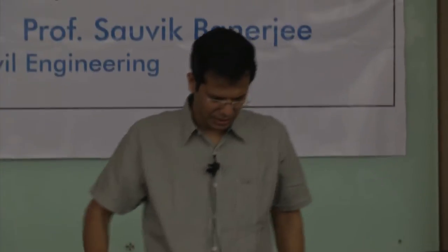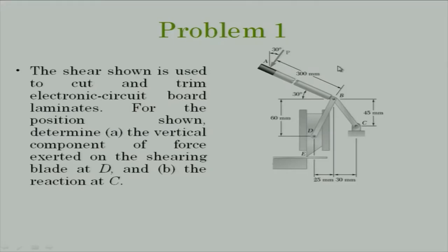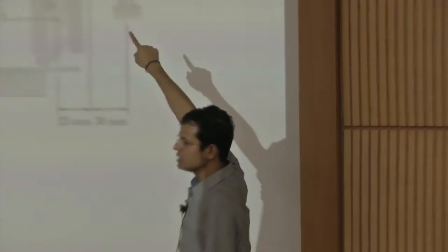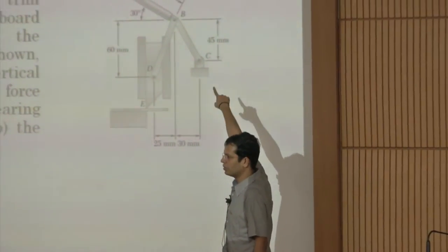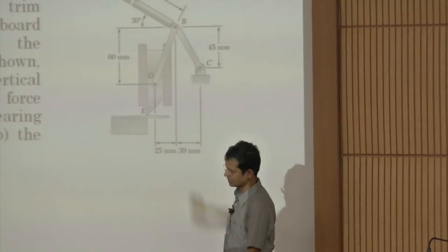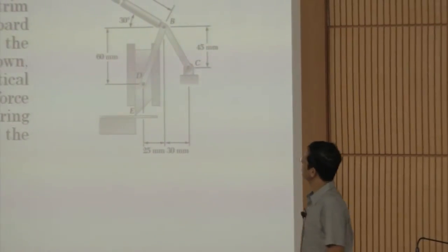Get the answer in terms of P and then report what the value is. There is a hinge between D and B, but member ABC is a full rigid body. ABC is a rigid body and it is connected by pin joint to member DB at point B. Member DB is a two-force member; member ABC is not.